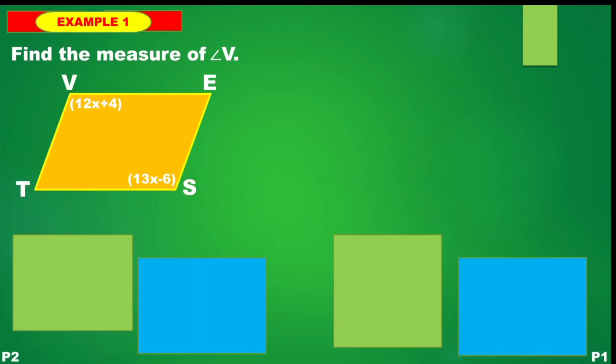To solve, we have angle V is congruent to angle S. Substituting: 12x + 4 = 13x − 6. We transfer 12x to the other side, giving 13 − 12, and negative 6 is transferred to the other side, becoming 4 + 6.